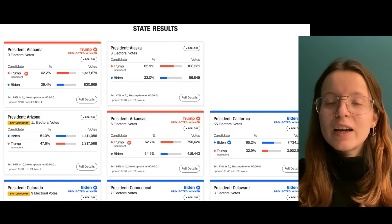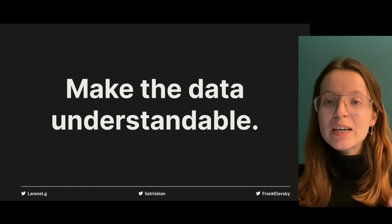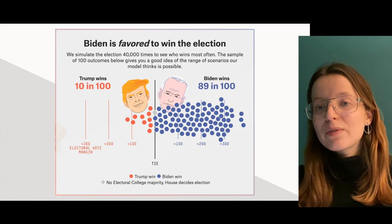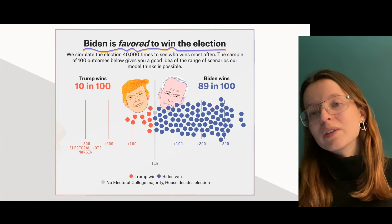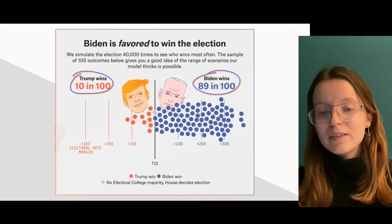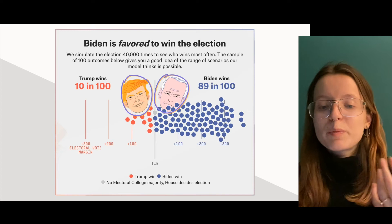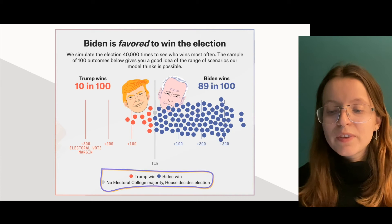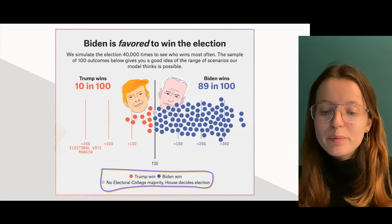Moving away from color and more to the conceptual and UX level, we have to make sure that the data is understandable. It can be useful to show the same data in different formats. For example, this 538 graph predicting the US election results already wrote the summary in the title — 'Biden is favored to win the election.' Then you can see the statistics and numbers underneath, the same numbers visualized with dots, and Trump and Biden represented not only with words but with pictures. The blue for Democrats and red for Republicans also helps, and it's explained underneath the graph as well.